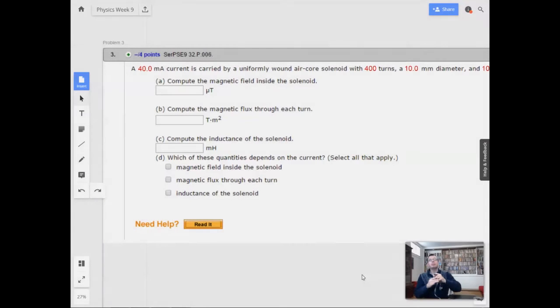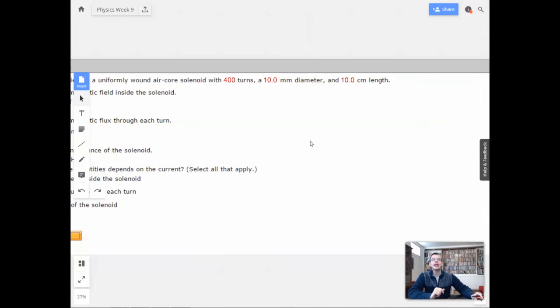Week 9, problem 3. A 40 milliamp current is carried by a uniformly wound air core solenoid with 400 turns, a 10 millimeter diameter and a 10 centimeter length.